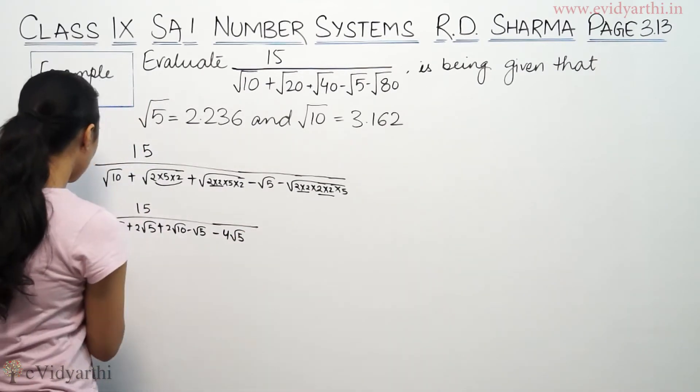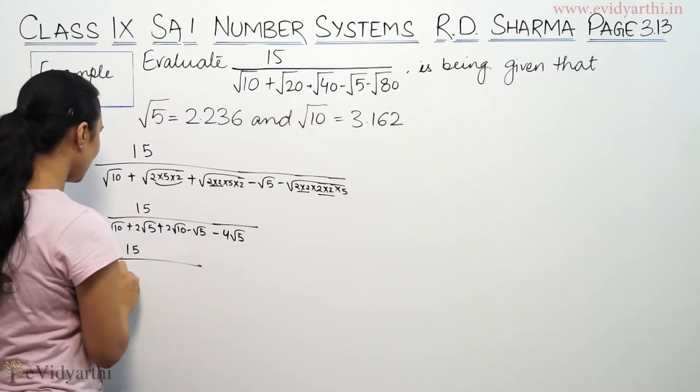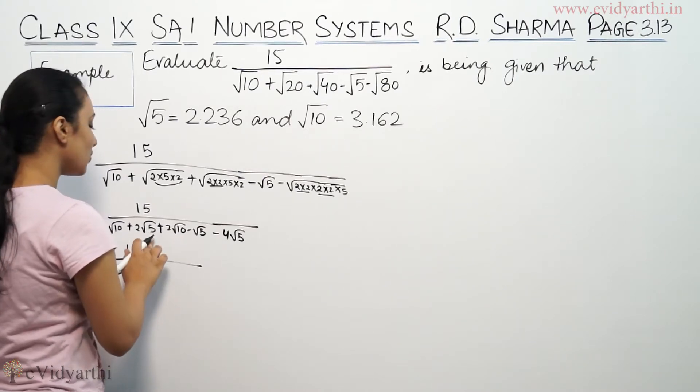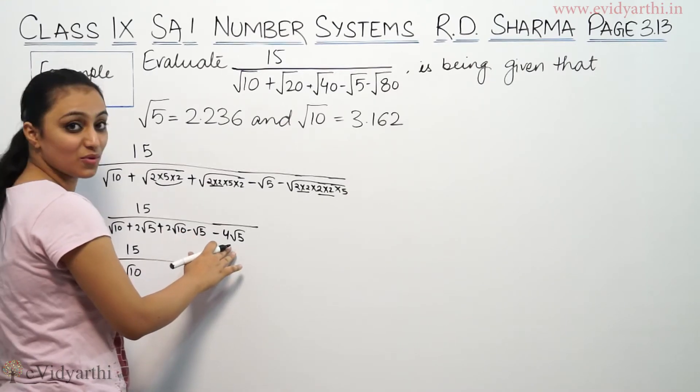Now this becomes 15 upon root 10 plus 2 root 10 is 3 root 10, and 2 root 5 minus root 5 is root 5 minus 4 root 5.